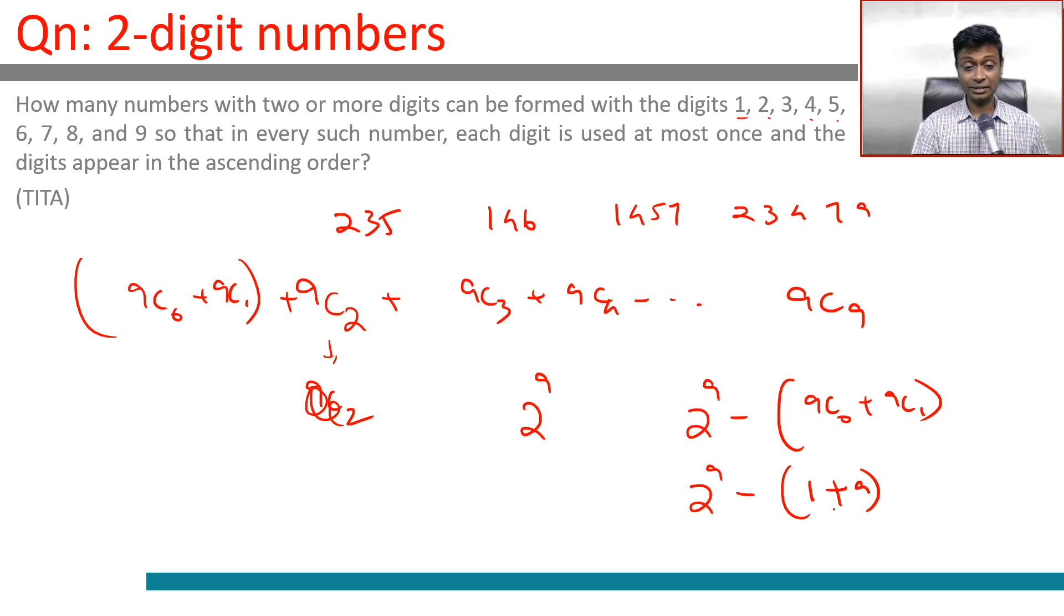2 power 9 is 2 cube whole cube, which is 512 minus 10, which is 502. Wonderful question—not a giveaway, but methodically solving you can get to the answer.